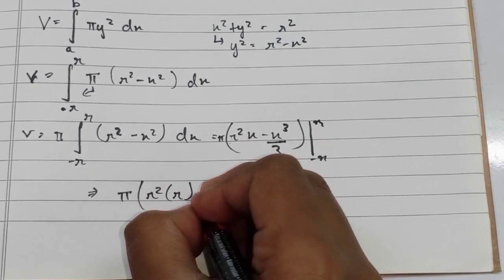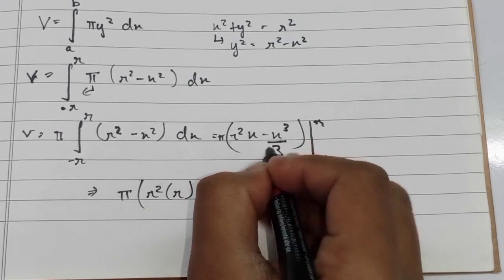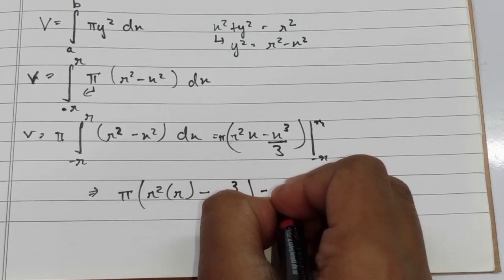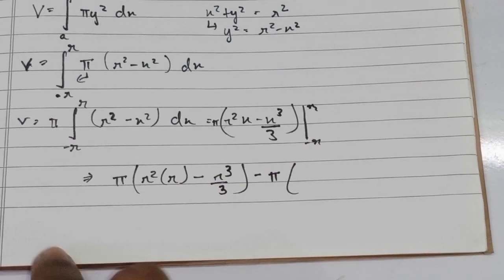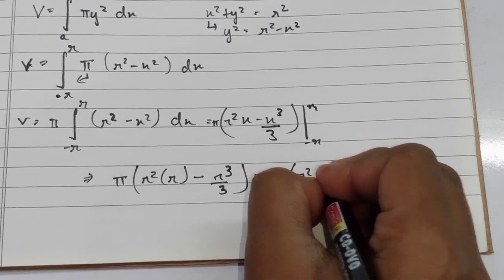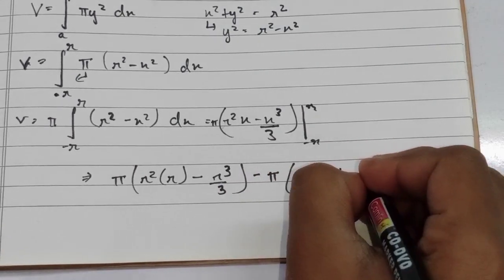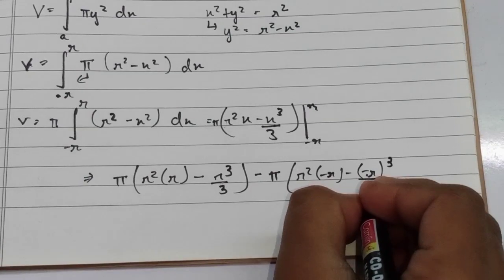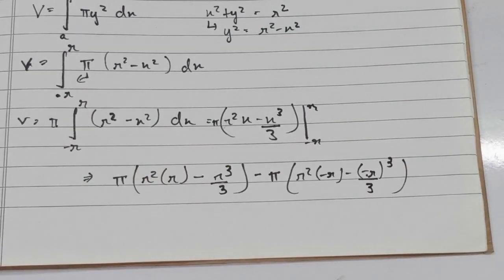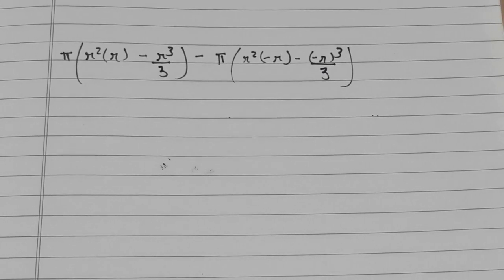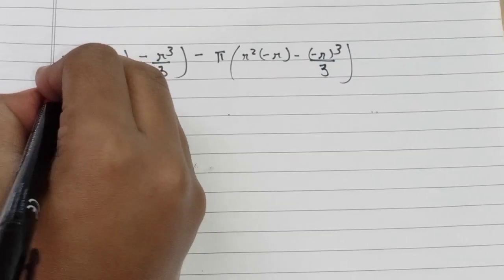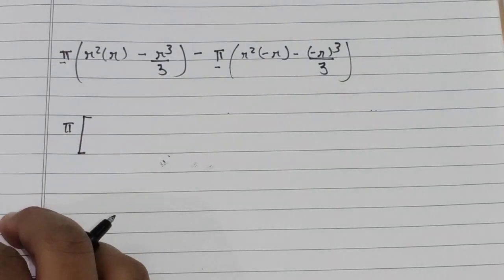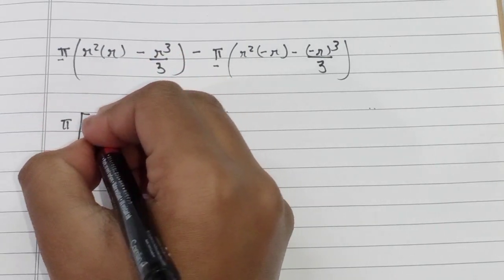...minus r² times (−r) minus (−r³/3). Taking π common, we get π times: r² · r = r³, minus r³/3, minus r² · (−r) = −r³, minus (−r³/3).